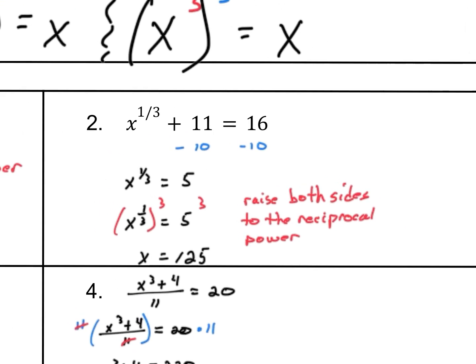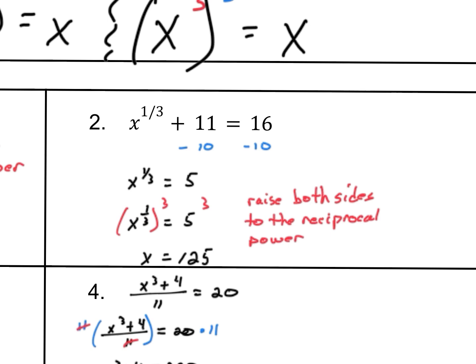Number two is similar. It says x to the one-third plus 11 equals 16. This x to the one-third has a plus 11 on the left side, so we start by subtracting 11 — and we get five. The equation now says x to the one-third equals five. The strategy for solving an equation with fractional exponents is to raise both sides to the reciprocal power. So x to the one-third raised to the third power, and the right side five to the third power. X to the one-third to the third gives x, and five to the third is 125. The answer to number two is 125.